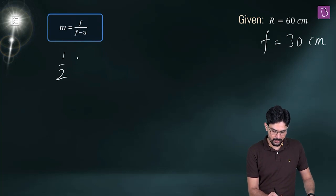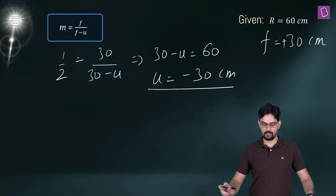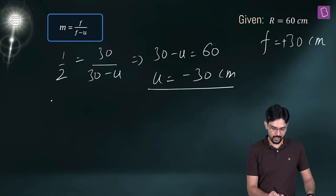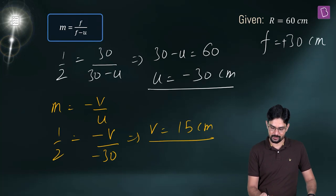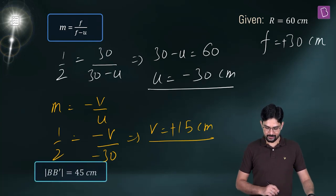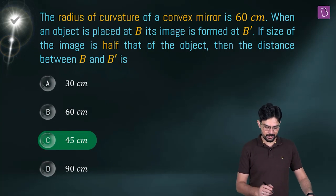Now using the relation M = −V/U: 1/2 = −V / (−30), so V comes out to be 15 cm with a positive sign, indicating the image is formed behind the mirror and is virtual. The distance between the object and its image is 30 + 15 = 45 cm, so option C is correct.